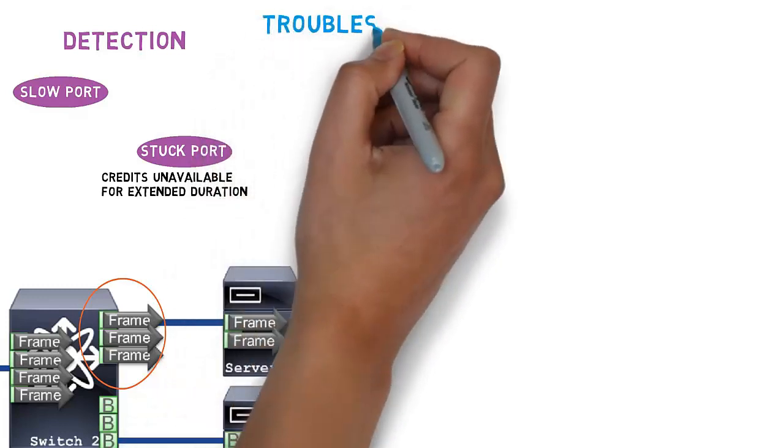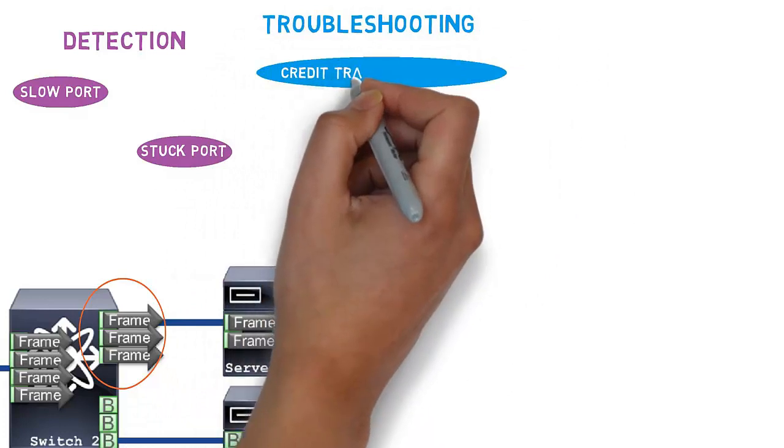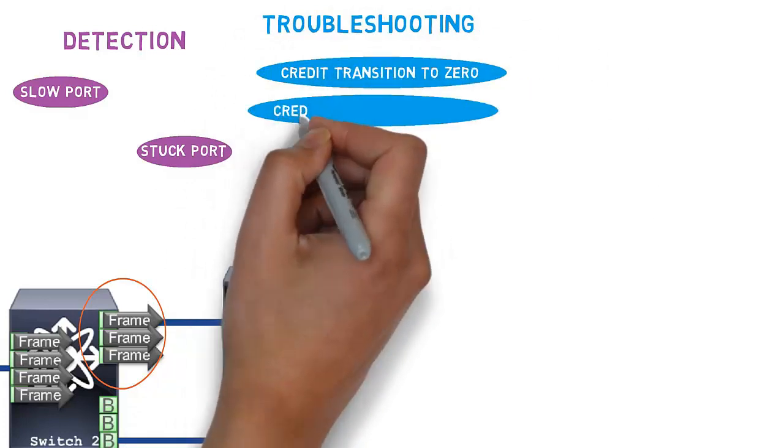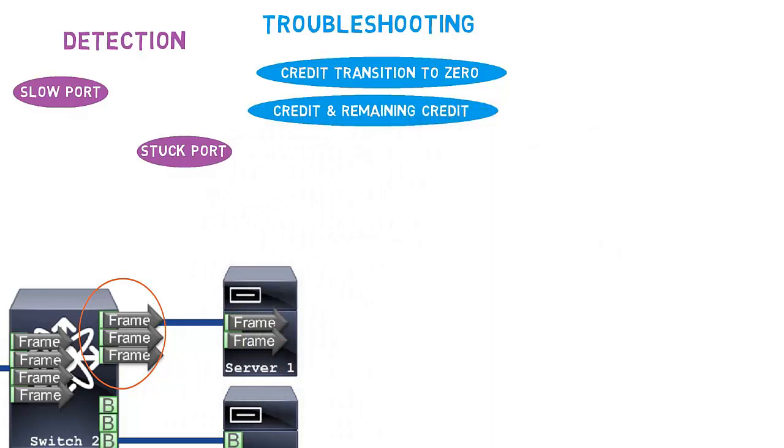For troubleshooting, Cisco MDS switches detect the number of times when remaining credits transition to zero. The count of total credit and remaining credit is displayed.